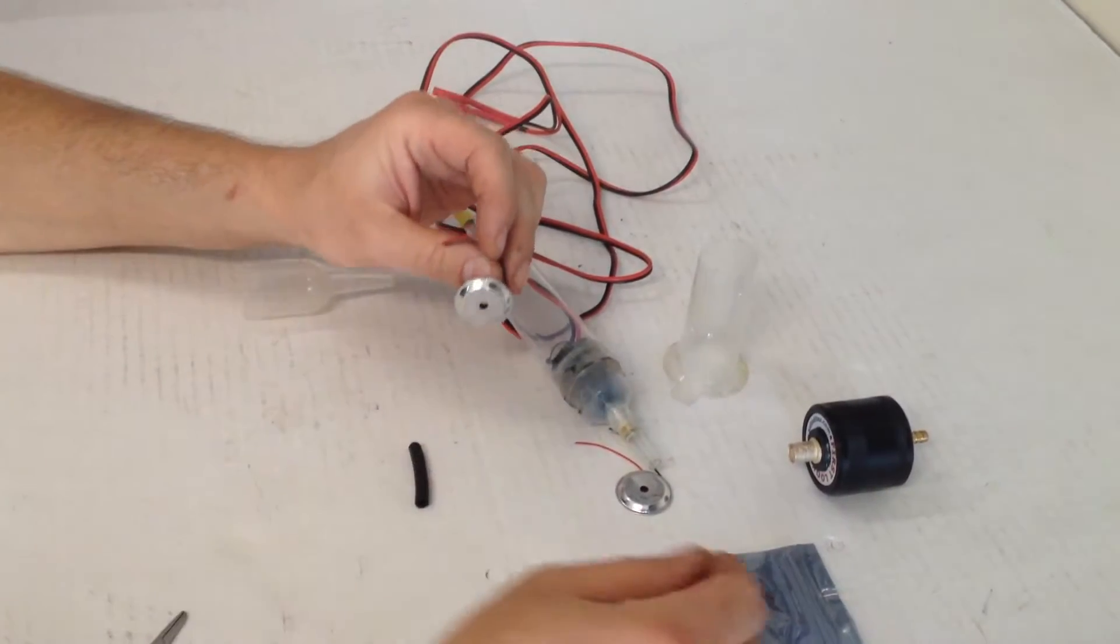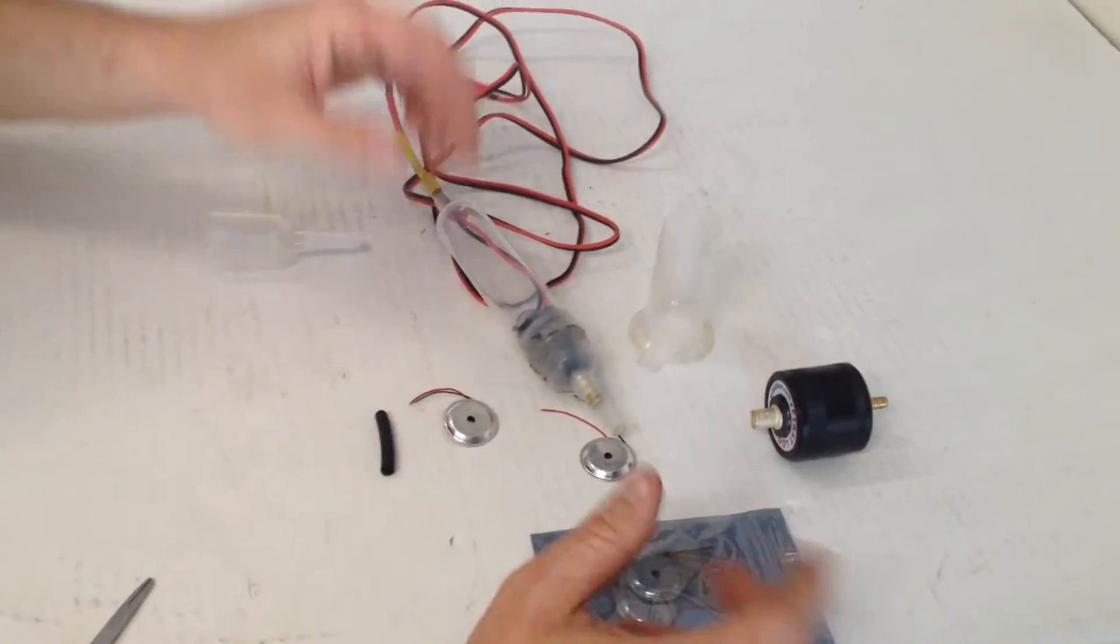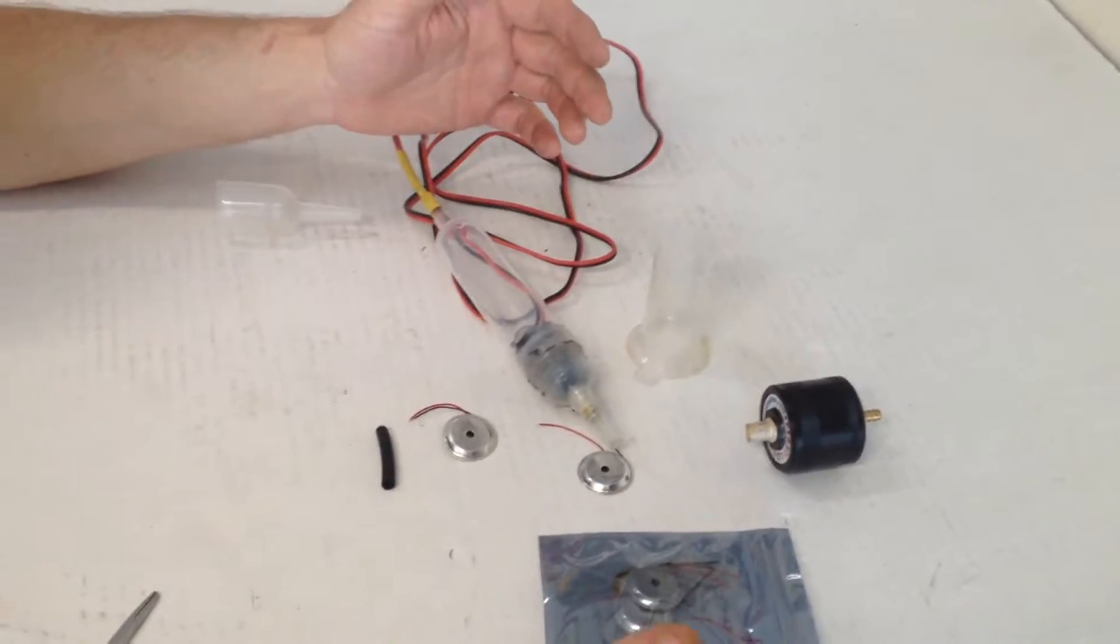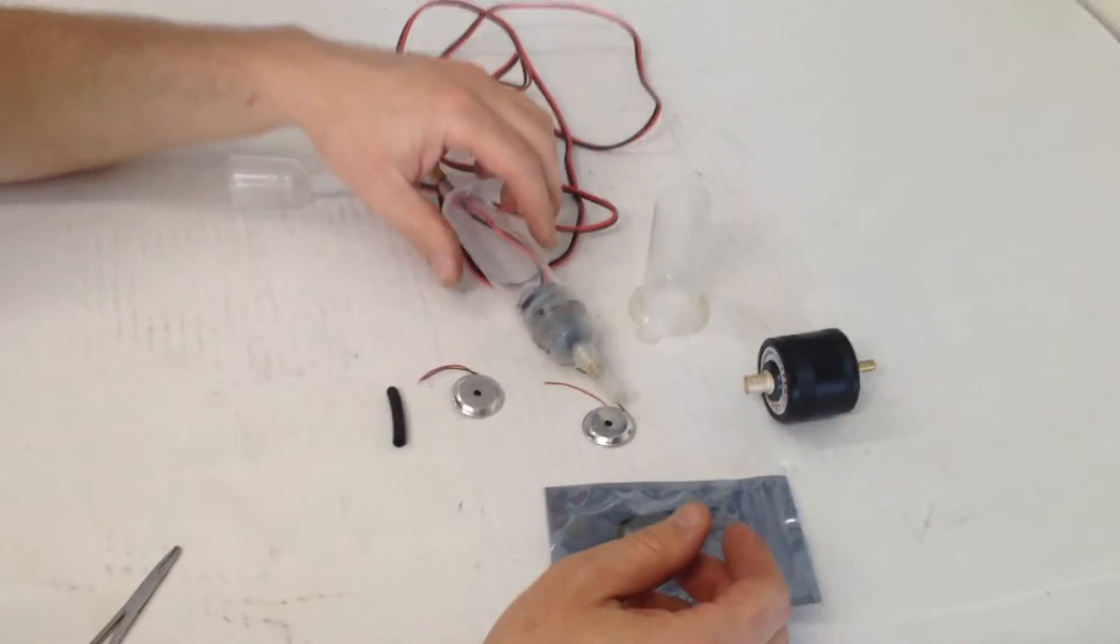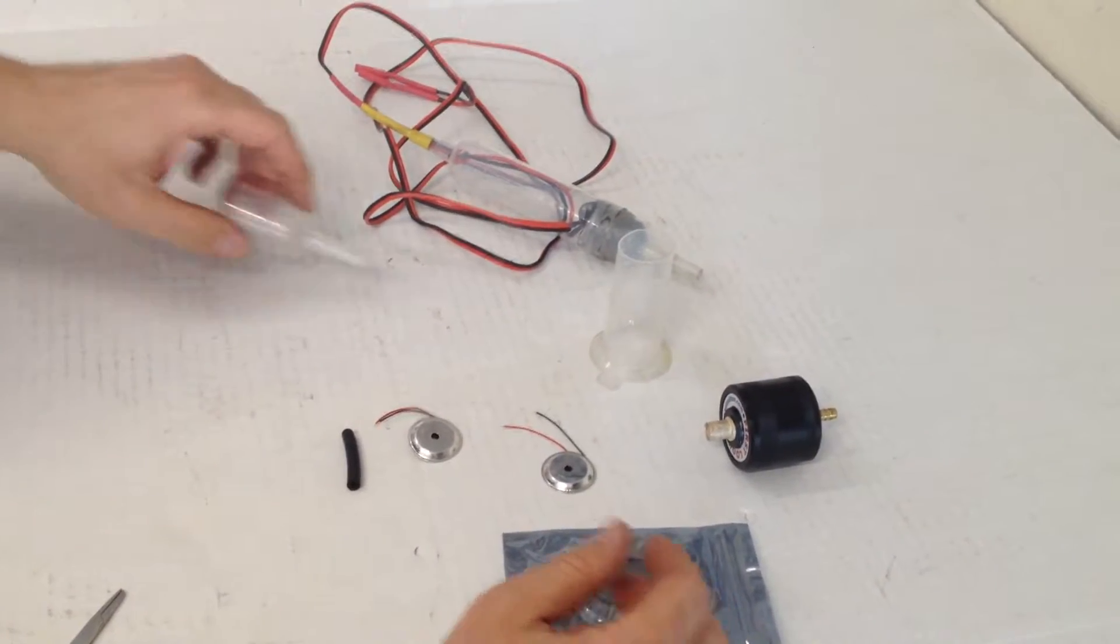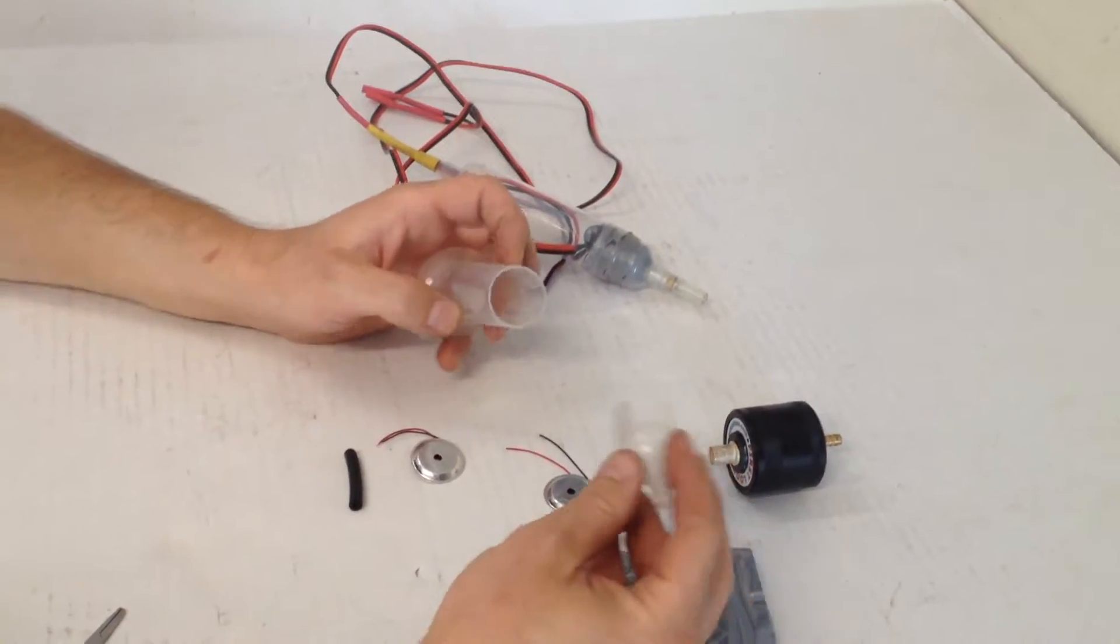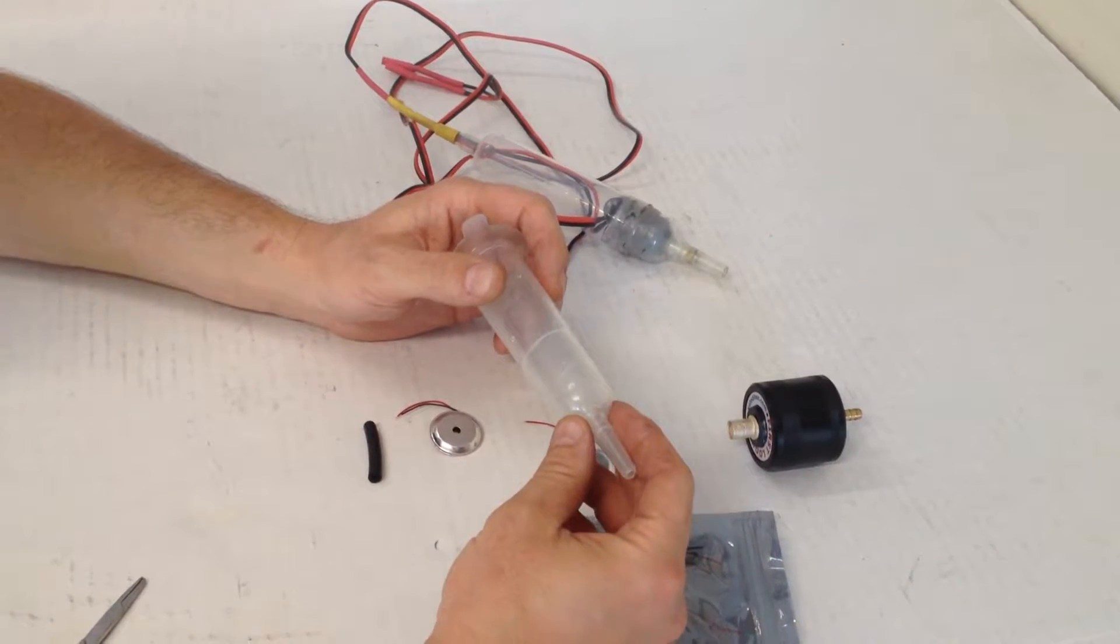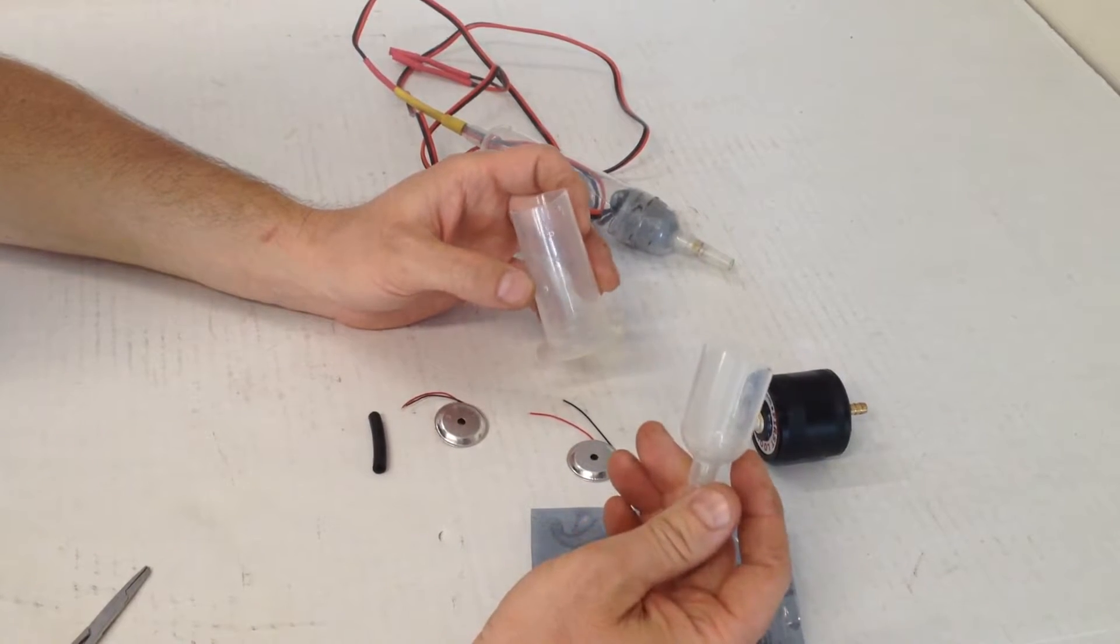So all you're going to need for this project is two turkey basters, and that's what I use. You can use whatever you want as long as it is going to be functional for you. So this time I just have one, but you're going to have an idea how I made this. So I just cut one end of it,